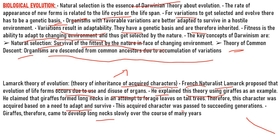Lamarckism is the first theory of evolution, proposed by Jean-Baptiste de Lamarck in 1801 and 1809. It proposes that organisms undergo certain changes for adapting themselves to the environment and the characters thus acquired are passed on to the next generation. Lamarckism is popularly called the theory of inheritance of acquired characters as well as the theory of use and disuse of organs. Lamarck also coined the terms biology and invertebrates, besides founding the groups of Annelida, Arachnida, and Crustacea.